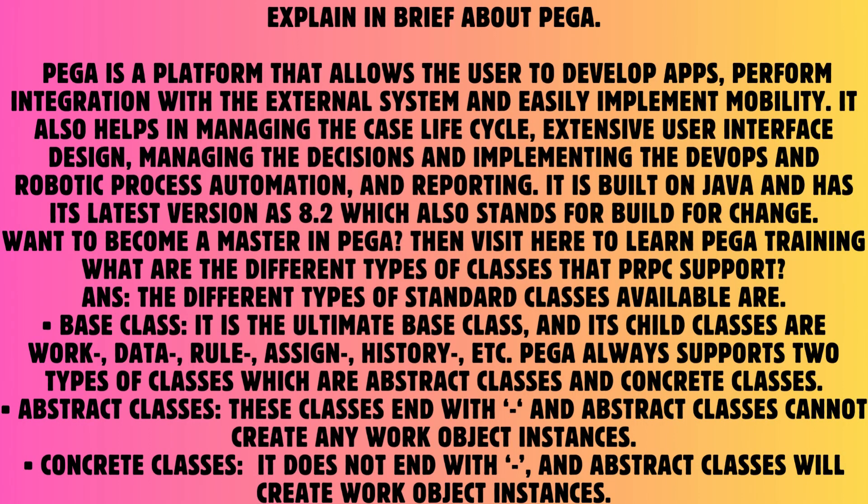Question: Explain in brief about PEGA. Answer: PEGA is a platform that allows the user to develop apps, perform integration with external systems, and easily implement mobility. It also helps in managing the case lifecycle, extensive user interface design, managing decisions, and implementing DevOps and robotic process automation and reporting. It is built on Java and has its latest version as 8.2, which also stands for 'build for change.'